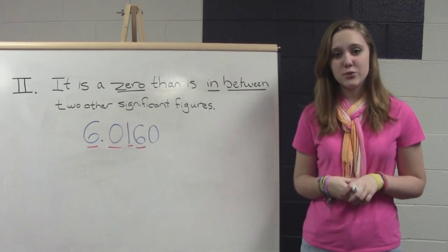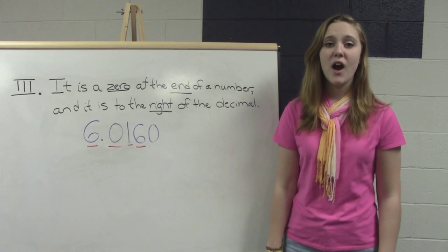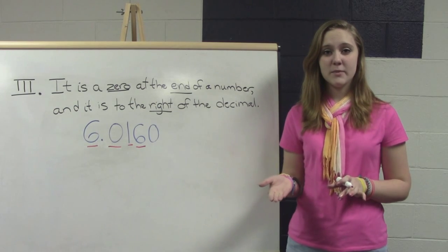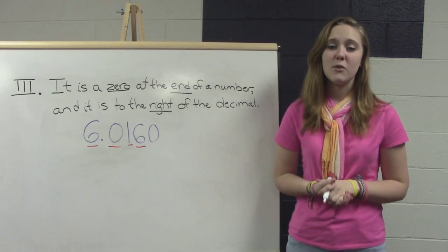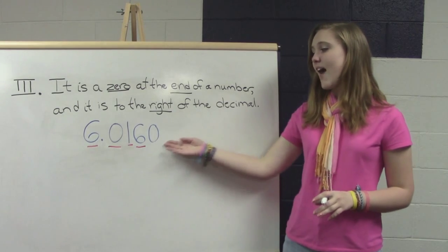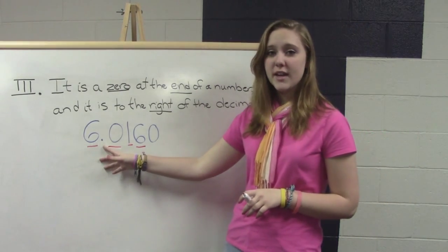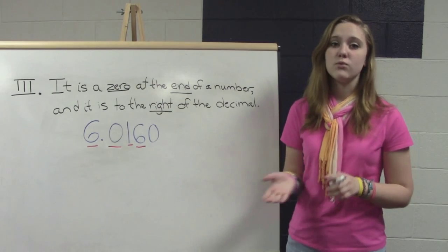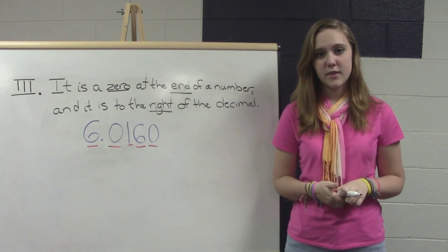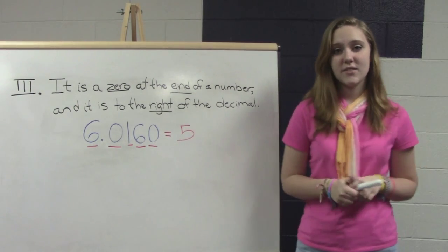Rule number three: this last rule also has to do with zeros. If you have a zero that is at the end of the number and it's to the right of the decimal point, it will be a sig fig. In this number, we have one zero left. We can see that it is at the end of the number because it doesn't have any digits after it, and our zero is to the right side of the decimal point. So this zero is also significant, meaning this number has five significant figures.